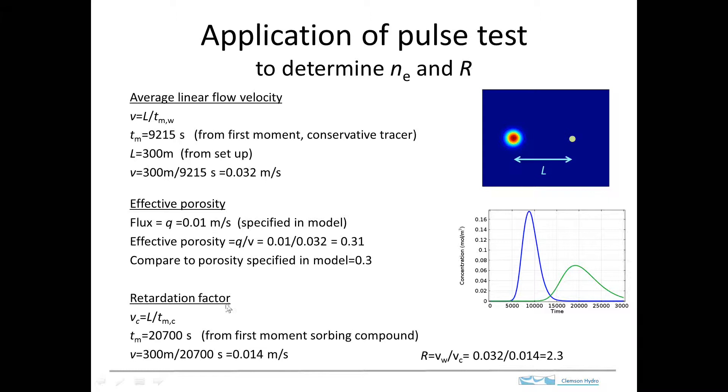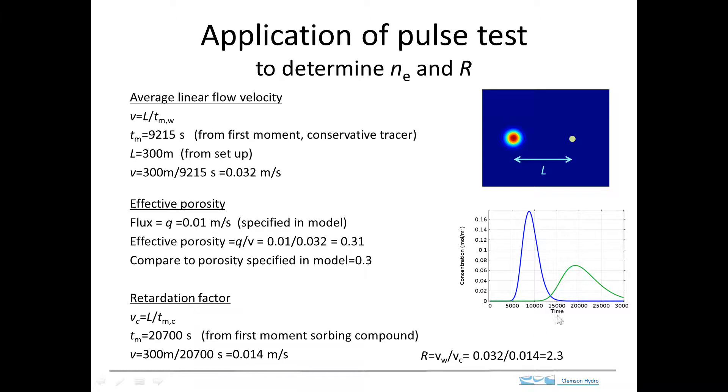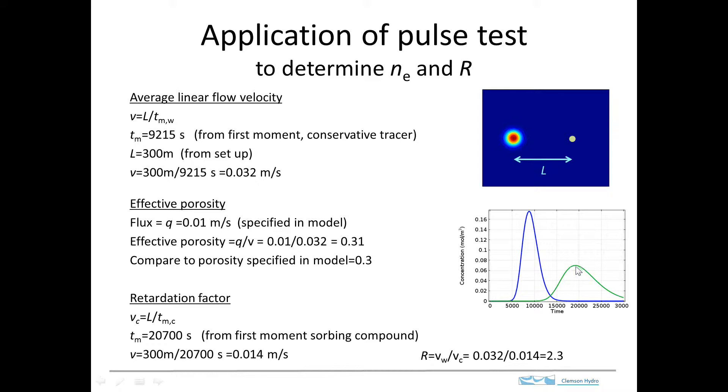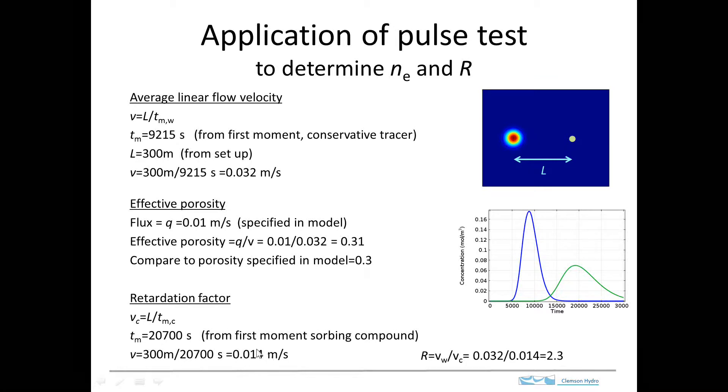We can also determine the retardation factor. If we determine the arrival time of this pulse, again using the first moment, then we can get the velocity of this compound. And doing that here, the first moment was 20,700 seconds, and that's right in here. So notice it's not the peak, it's a bit off the peak, but the first moment is what we want to use. And that gives us a velocity of this number here.